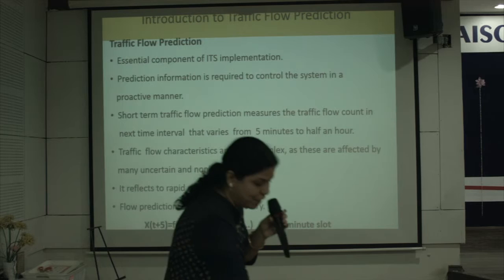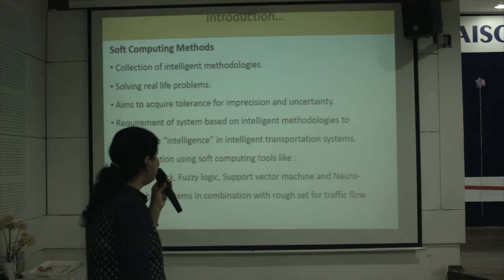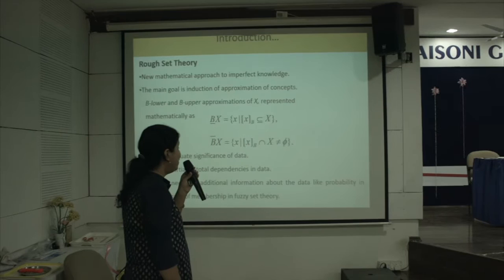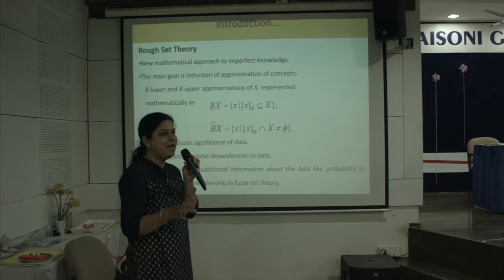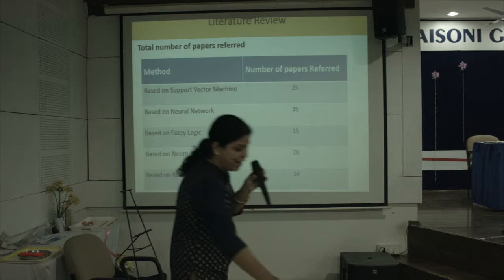Soft computing is a collection of intelligent methodologies used to solve real-life problems. It aims to acquire tolerance for imprecision and uncertainty. Rough set theory is a new mathematical approach to imperfect knowledge. The main goal of rough set theory is the induction of approximation of concepts and data defined by using lower approximation and upper approximation. It does not need any preliminary or additional information about data, such as probability in statistics or membership grade in fuzzy set theory.